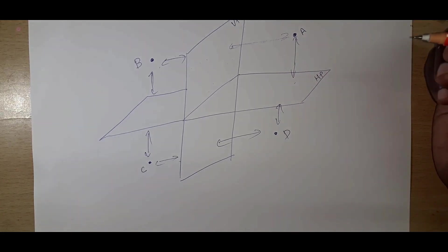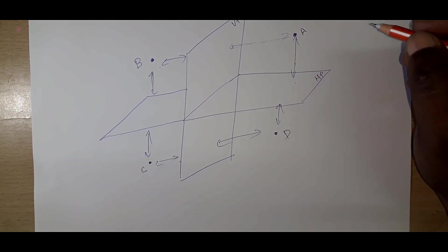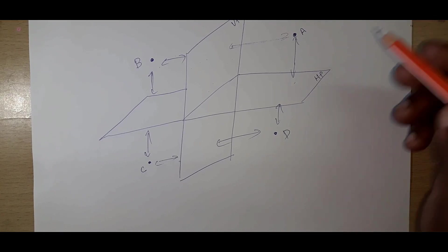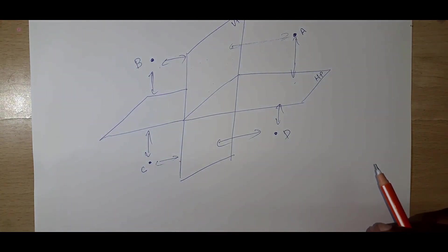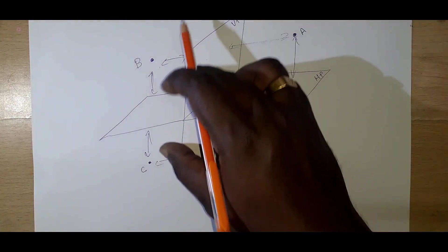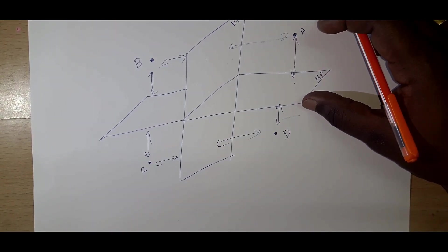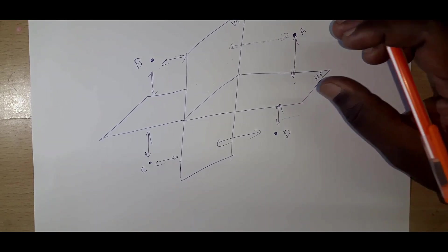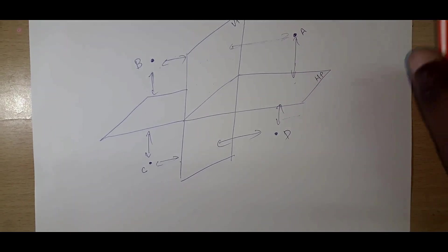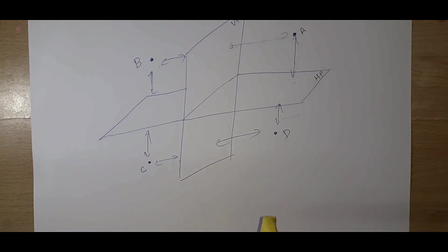Normally in our diagram for the engineering syllabus, we use only the first quadrant. For understanding purposes, all objects in further problems will be considered under the first quadrant only. This is what we are going to see in the further problems.